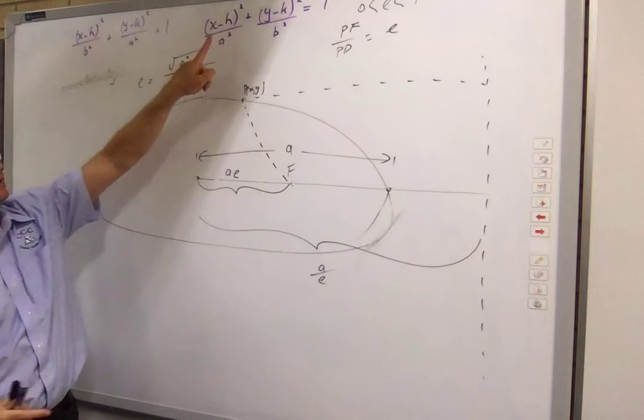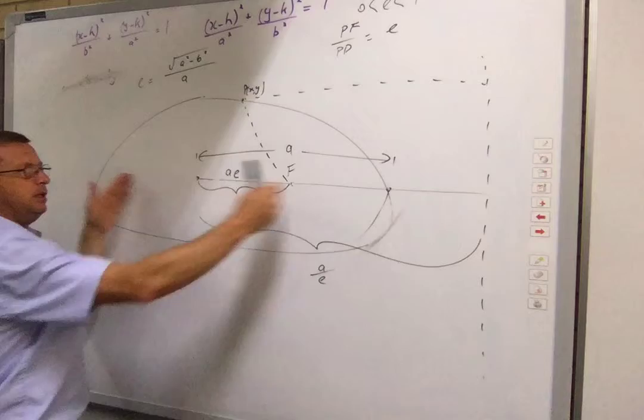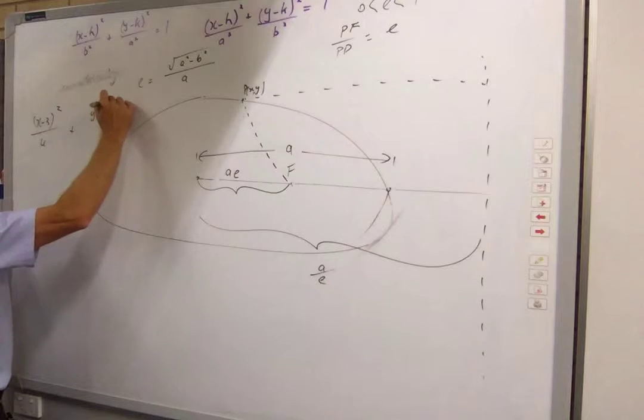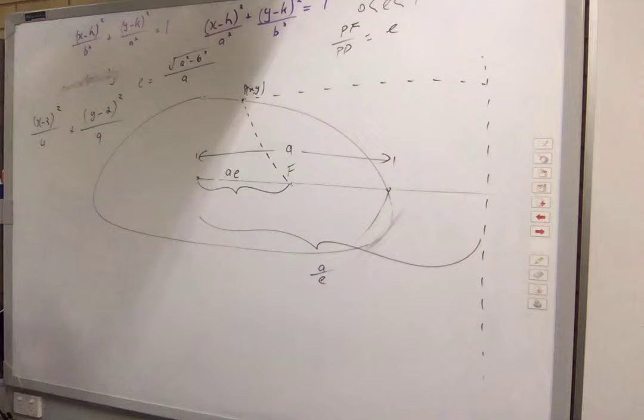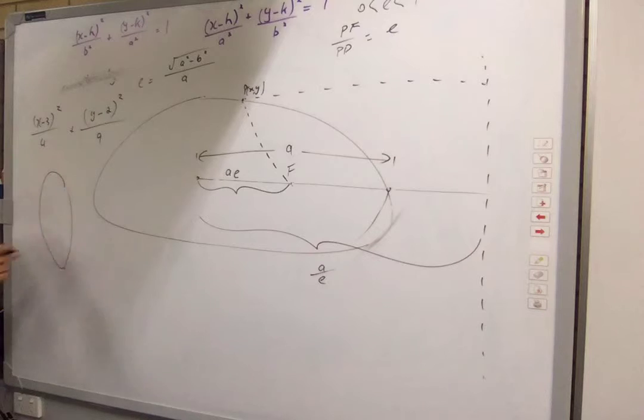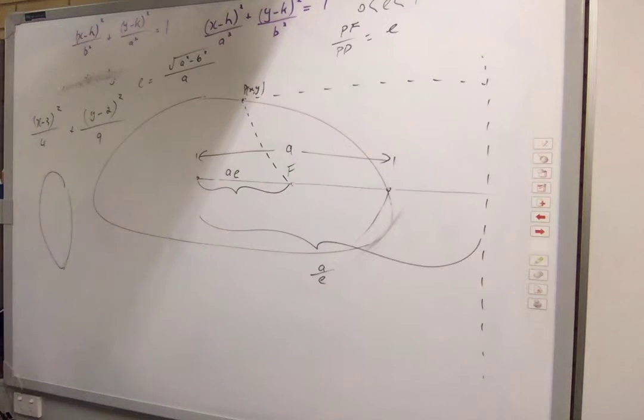A needs to be bigger than B. And the way that I've drawn this, the A links to how big the difference in x is. So if A is bigger then the distance between here and here is bigger. So it's a short, fat ellipse.